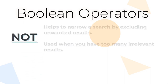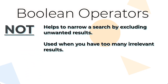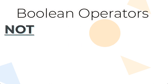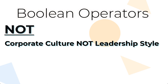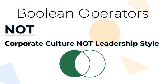NOT helps to narrow a search by excluding unwanted results. Typically, NOT isn't part of an initial search, but it is used when you have too many irrelevant results. For example, over the course of your search, you start to narrow down the topic you're interested in. You want to focus more on corporate culture and less on leadership style. By typing corporate culture NOT leadership style in the search box, the articles that appear will focus on corporate culture and not on leadership style.